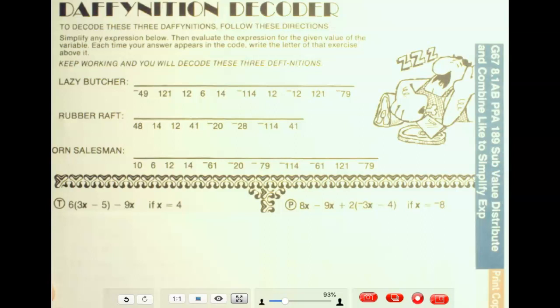Let me do a little distributing and combining, working through this puzzle, the old DAP emission decoder. Some real quality stuff here. Alright, so we're trying to find out what a lazy butcher is, and what a rubber raft, and a corn salesman.